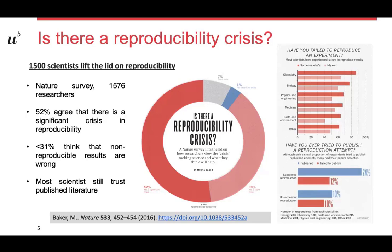Scientists were also asked if they had failed to reproduce an experiment, and this has happened in almost every area of science, with differences not that large. Some researchers have even attempted to publish an unsuccessful reproduction attempt, but this is notoriously difficult. Oftentimes, this just doesn't enter the literature, as shown before.